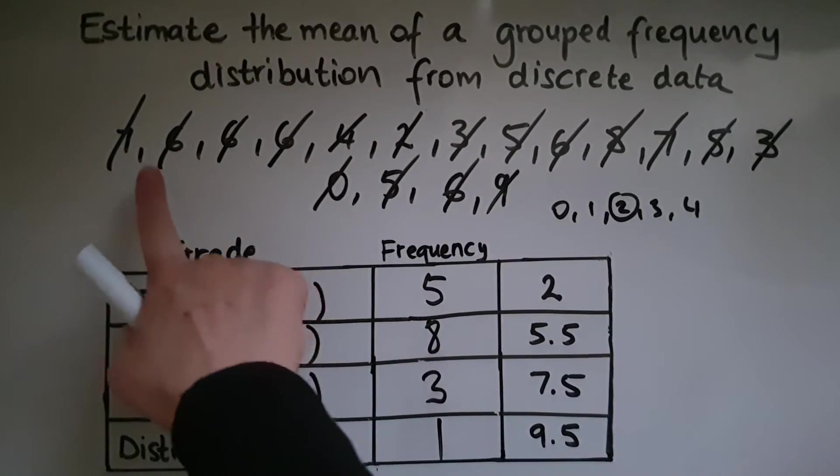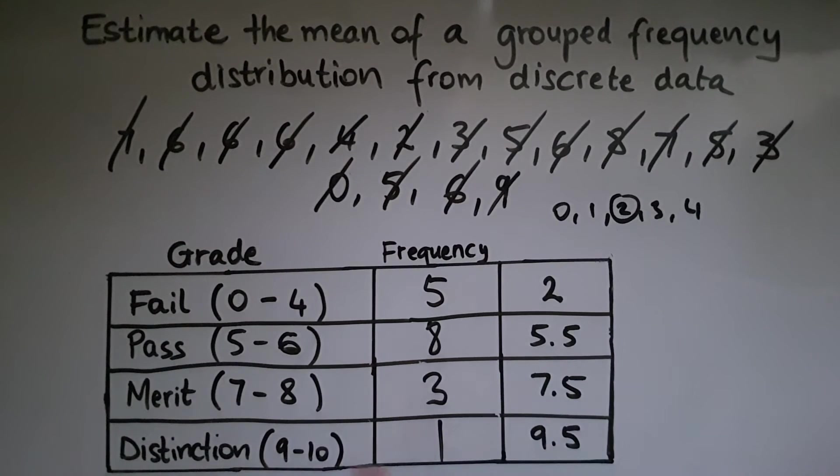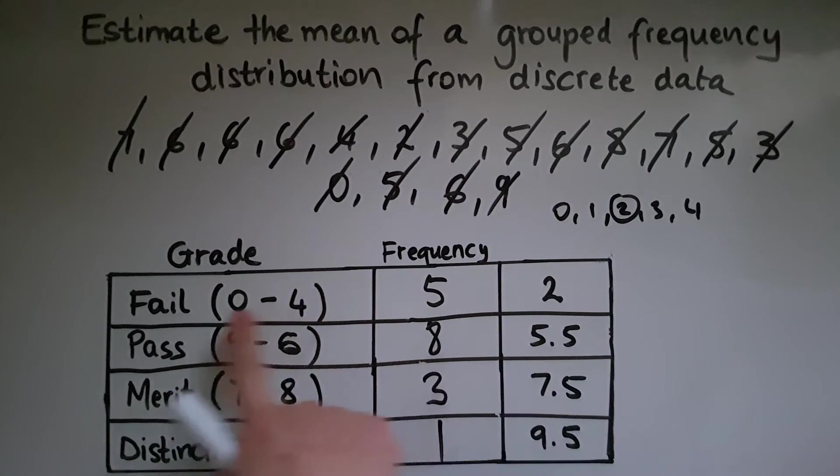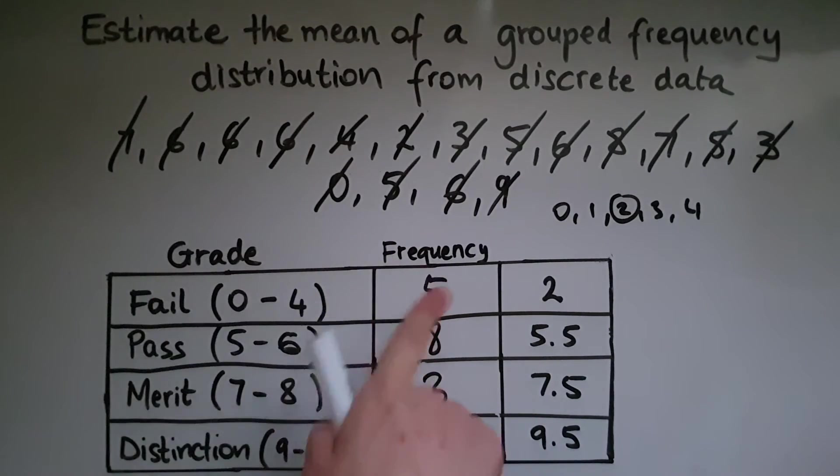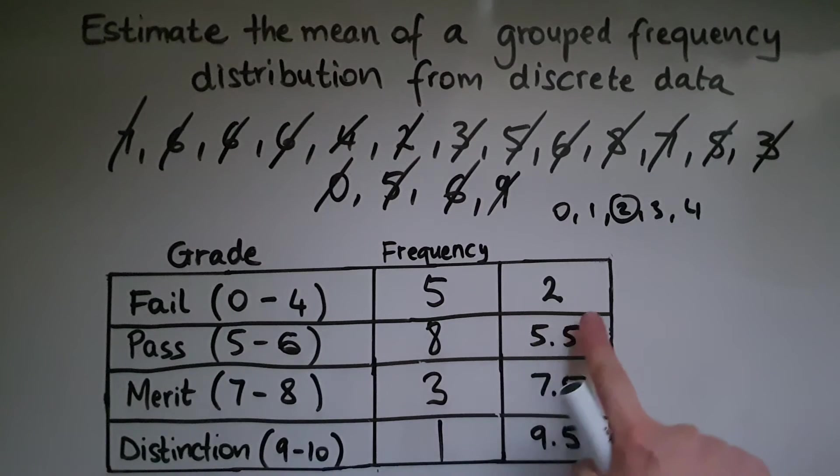So if you're not given the number of marks, but you just have this table, and you'd be told that 5 learners received a fail, you wouldn't know whether they got the 0, 1, 2, 3, or 4 marks. So that's why we find a midpoint.